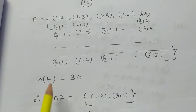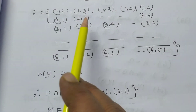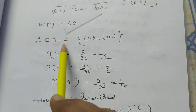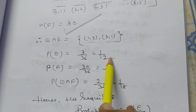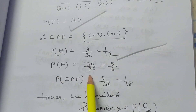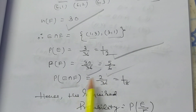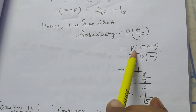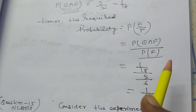F is the collection of elements {(1,2),(1,3),(1,4),(1,6),(6,1),(6,2),(6,3),(6,5)}, so the cardinal number of F is 30. E∩F = {(1,3),(3,1)}. P(E) = 3/36 = 1/12. P(F) = 30/36. P(E∩F) = 2/36 = 1/18. Hence the required probability P(E|F) = P(E∩F)/P(F) = (1/18)/(5/6) = 1/15.